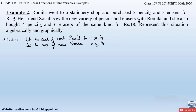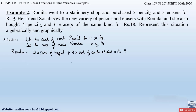Let us first represent the situation algebraically by writing down equations. Romila bought two pencils and three erasers, so: 2 × (cost of each pencil) + 3 × (cost of each eraser) = 9. Substituting x for pencil cost and y for eraser cost, we get 2x + 3y = 9. Let us take this as Equation 1.